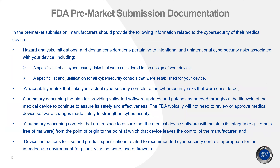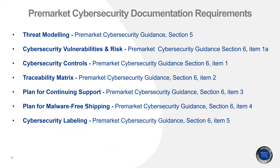For pre-market submission documentation, manufacturers should always establish, document, and maintain an ongoing process for identifying hazards associated with the cybersecurity of the device, evaluate and control the risk, and monitor the effectiveness of controls. FDA is aware that all cybersecurity risks cannot be anticipated — it is impossible. For that reason, FDA recommends all manufacturers document the process to assess cybersecurity risk as much as possible. The pre-market cybersecurity documentation requirements are: threat modeling, cybersecurity vulnerabilities and risk, cybersecurity controls, traceability matrix, plan for continuing support, plan for malware-free shipping, and cybersecurity labeling.